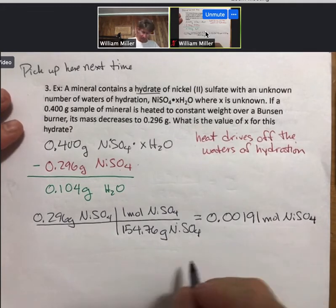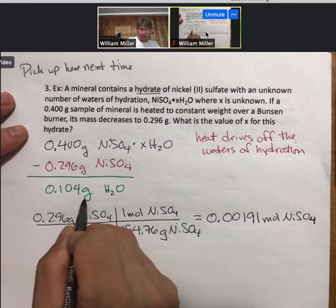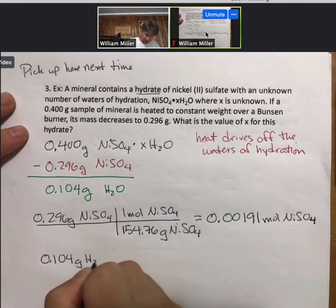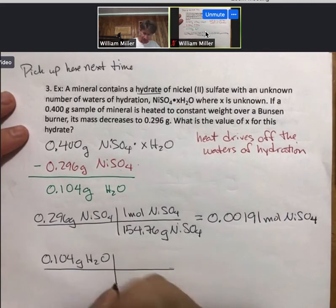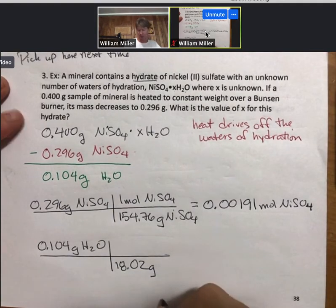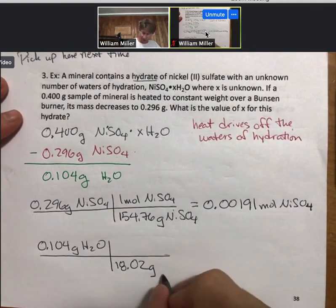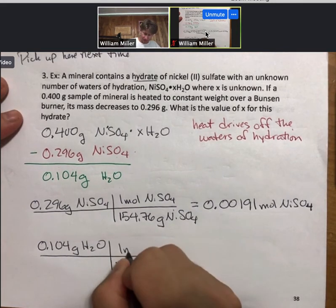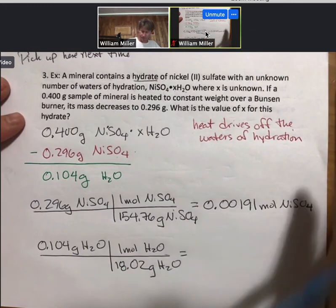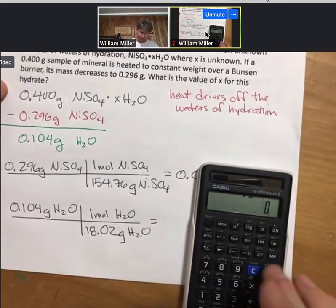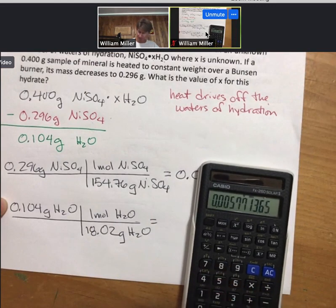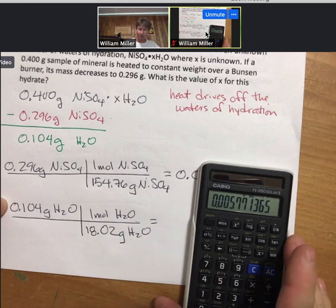Now let's do the same thing for the H₂O, grams to moles. I happen to have memorized, because I do it a lot, that the molar mass of H₂O is 18.02 grams per one mole. Let's multiply this out: 0.104 divided by 18.02 equals 0.00577.